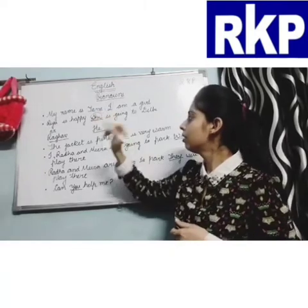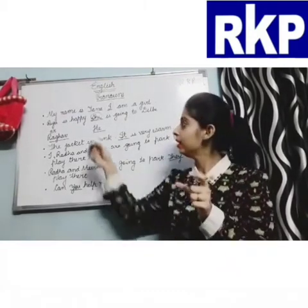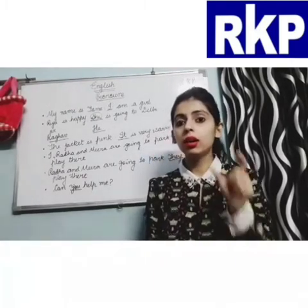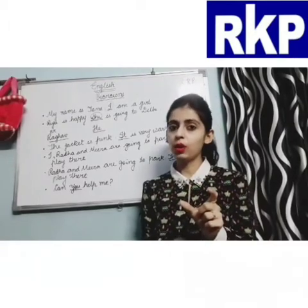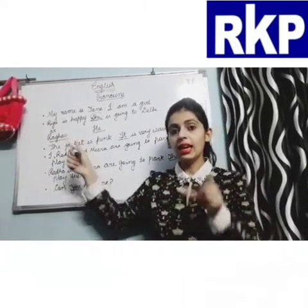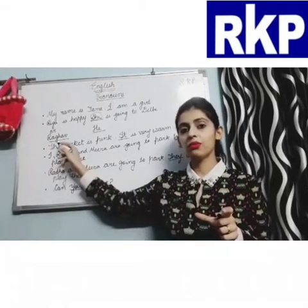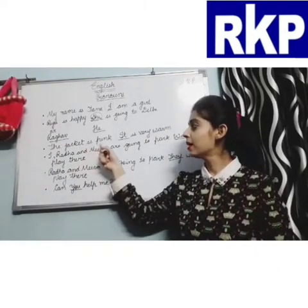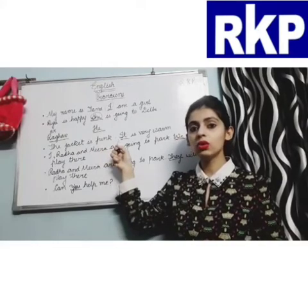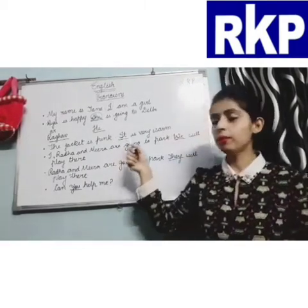Saying 'Ria is happy. Ria is going to Delhi' sounds awkward. So to avoid repetition of the noun 'Ria', I use the pronoun 'she'. Similarly, if the name of a boy is given — for example, 'Raghav is happy. He is going to Delhi' — the pronoun 'he' is used since Raghav is a boy. For an object: 'The jacket is pink' — in the next sentence, 'it' will be used, because 'it' specifies objects.